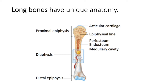The ends of long bones are called epiphyses (plural) or epiphysis (singular). The end closer to your body is the proximal epiphysis, and the end further away is the distal epiphysis. In this picture of a humerus, the proximal epiphysis articulates with the scapula — your shoulder blade, part of the pectoral girdle — while the distal epiphysis articulates with the ulna of your anti-brachium, or forearm.